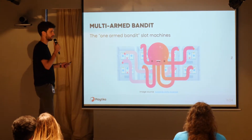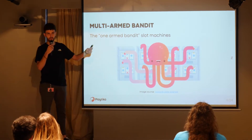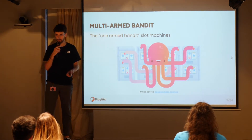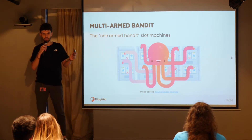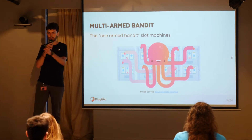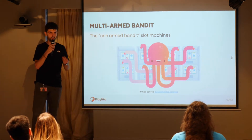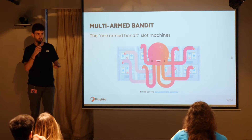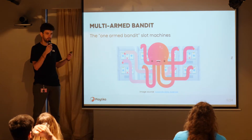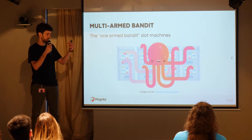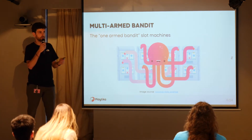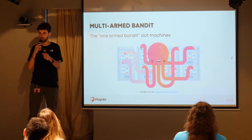Multi-arm bandit was introduced with the canonical example from which it took its name: the slot machine, also called a one-armed bandit. The octopus represents the RL agent. It has a series of slot machines to pull. Each machine gives some payout — some reward. The whole point for the octopus is to learn a policy to maximize reward in the long term, even though you don't know the probability distribution over each slot machine.